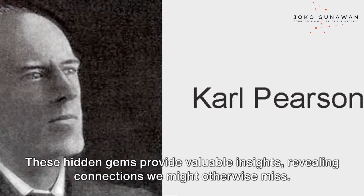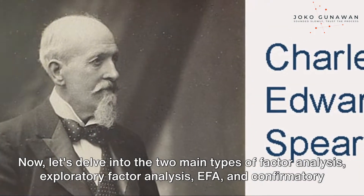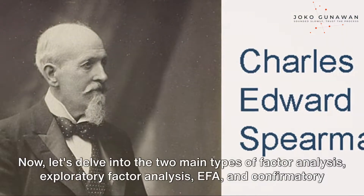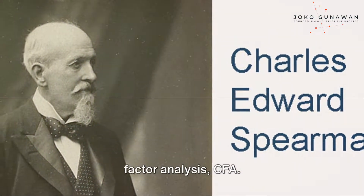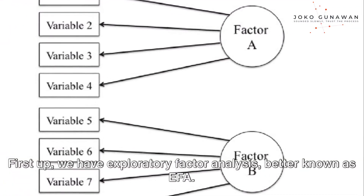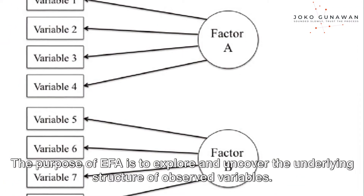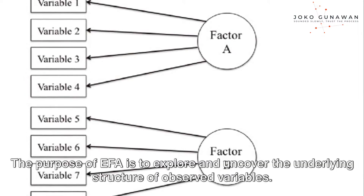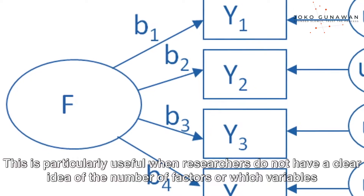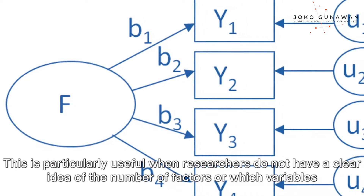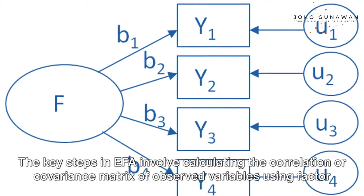Now let's delve into the two main types of factor analysis: Exploratory Factor Analysis (EFA) and Confirmatory Factor Analysis (CFA). First up, we have Exploratory Factor Analysis, better known as EFA. The purpose of EFA is to explore and uncover the underlying structure of observed variables. This is particularly useful when researchers do not have a clear idea of the number of factors or which variables should load on each factor.